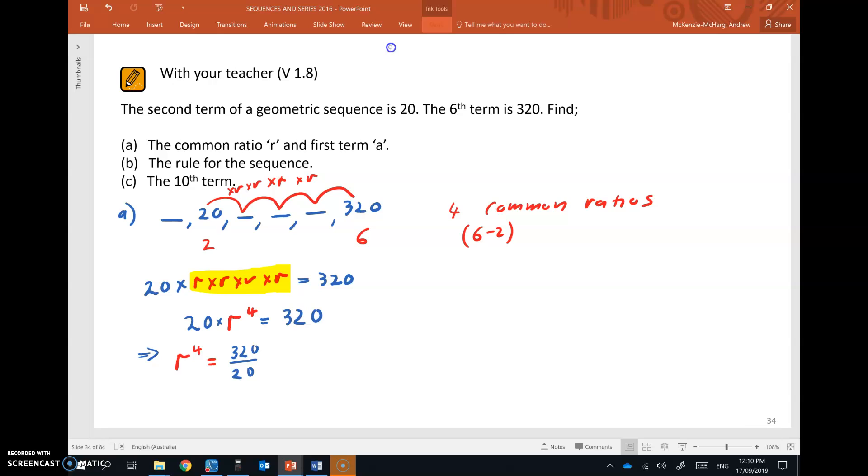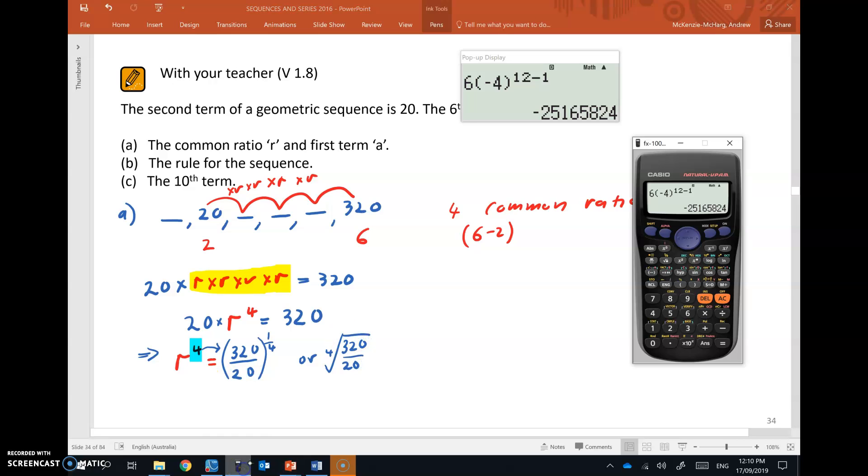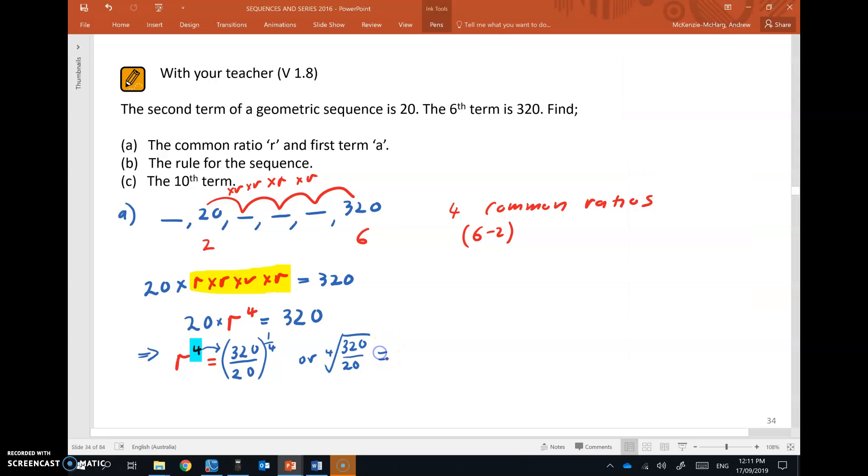Now we need to take this power to the other side. What happens to that power when it goes over the other side? Well, there's a couple of different ways to do it. We can say that this changes to a power of 1 quarter or you can take the fourth root of those numbers. So to do this on the calculator, we could do 320 over 20, close the bracket and go to the power of 1 quarter, which gives 2. Or we could take a fourth root, which on this calculator is this button here, the fourth root of 320 over 20, which also gives 2. So the common ratio in this case is 2.